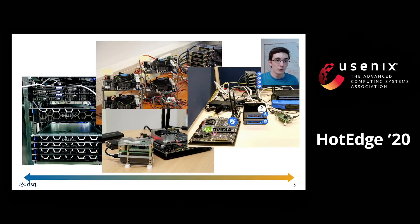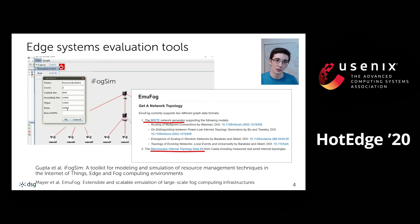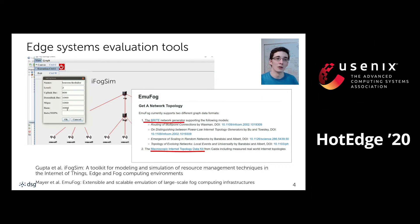First, we looked into different edge system simulators, which typically provide some way of describing an underlying infrastructure. The problem is that either the configurations are very use-case specific because someone needs to manually design them, or they're not representative of edge systems because they're generated randomly or represent internet-scale topologies.